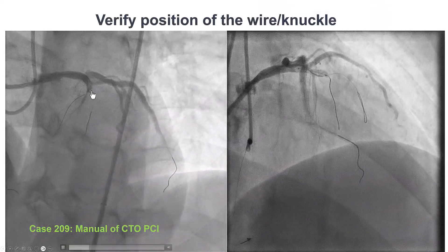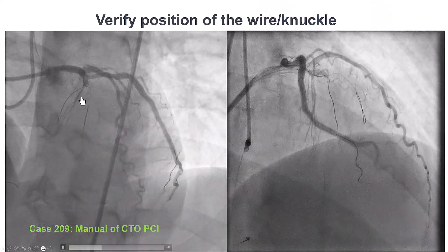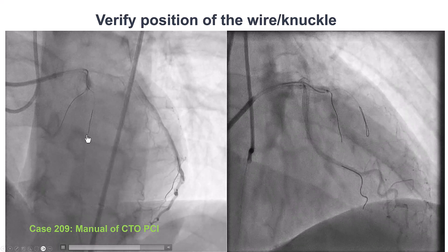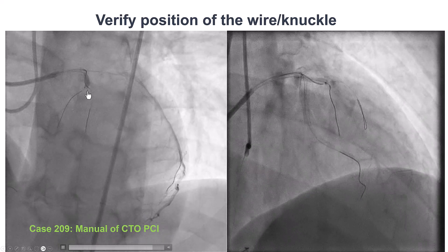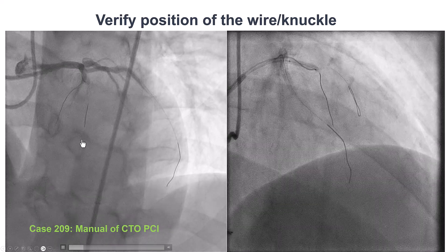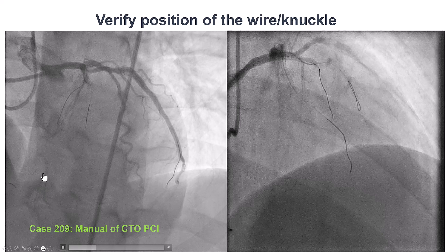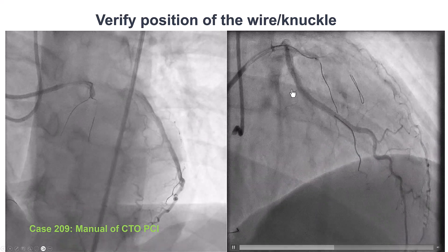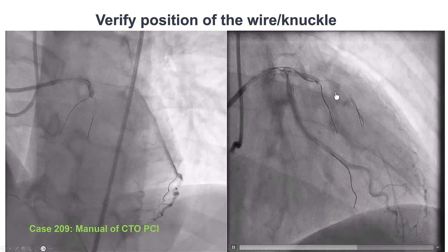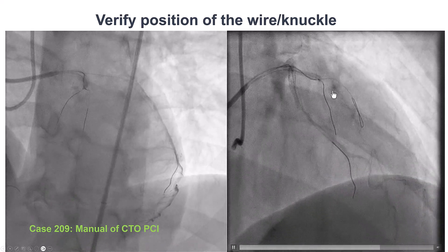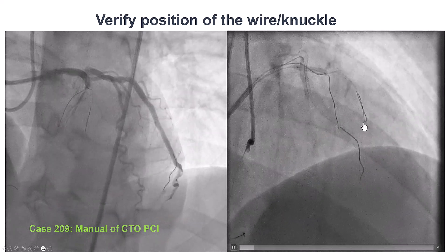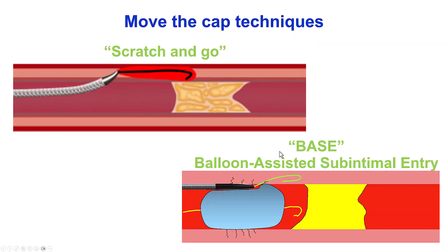When that happens, it is important to confirm that the wire is in the anticipated course of the vessel. Orthogonal projections are used, with contralateral or ipsilateral injection, to confirm that we are inside the vessel architecture — dancing with the distal vessel, as we say — and then we are able to get through.